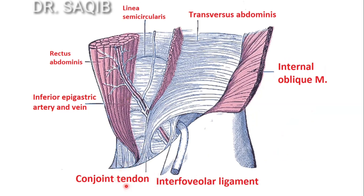This is the conjoint tendon, and this is the interfabular ligament. This is the spermatic cord over here, and you can see the interfabular ligament's relation with the inferior epigastric artery. This is the inferior epigastric artery — the interfabular ligament passes in front of it.